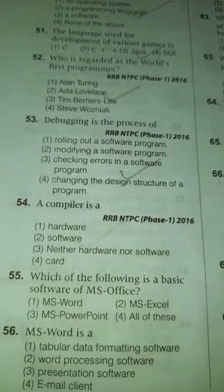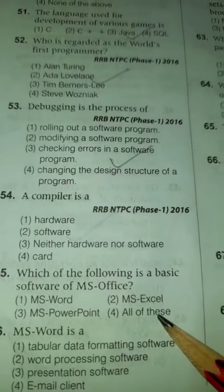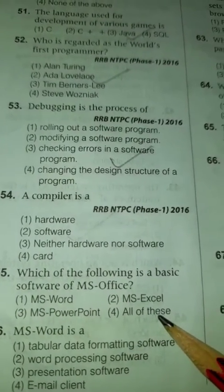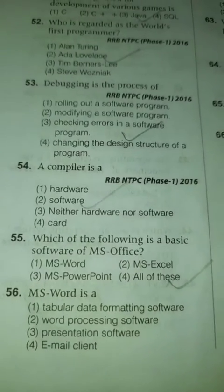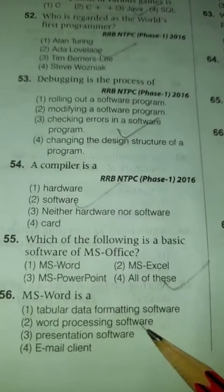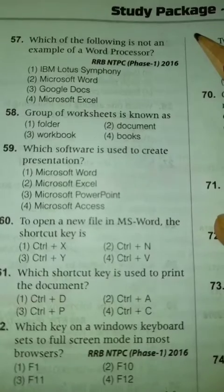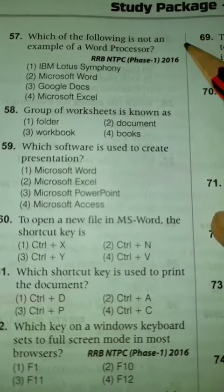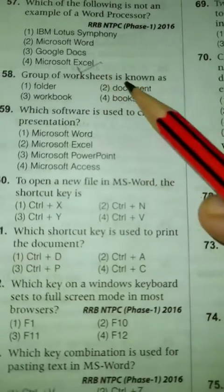Debugging is the process of checking errors in a software program. A compiler is software. Which of the following is a basic software of MS Office? MS Word, MS Excel, and all of these. MS Word is a word processing software. Which of the following is not an example of a word processor? Microsoft Excel.